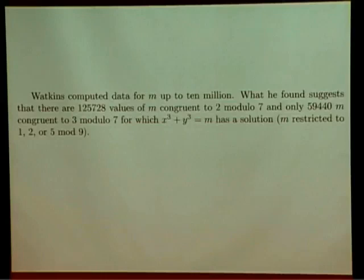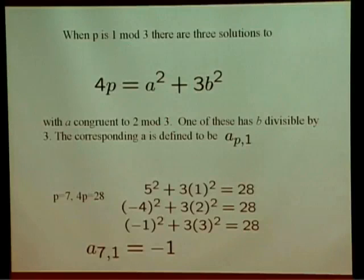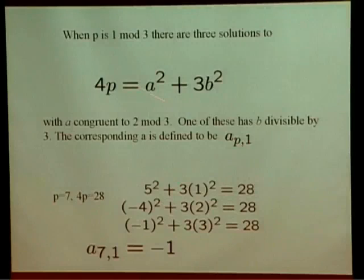Some of the number theory behind this is due to Gauss. When p is 1 mod 3, there are three solutions to 4p = a² + 3b² with a congruent to 2 mod 3. Precisely one of these will have b divisible by 3, and the a corresponding to that one is what we call a_{p,1}. For example, if p is 7, 4p is 28, and here's the way to write 28 as a² + 3b² with a being 2 mod 3. One of these has b divisible by 3, namely this one, and so a_{7,1} is defined to be minus 1.